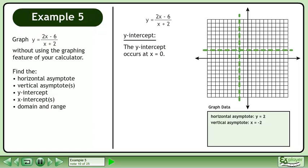Now we will find the y-intercept. The y-intercept occurs at x equals 0. Plug in 0 for x. This evaluates to negative 3. The y-intercept occurs at the point (0, -3).